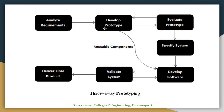We can see this with the help of a diagram. Here we are analyzing the requirements gathered, after which we develop a prototype. After evaluation, if the prototype is okay, we specify the system and proceed to implementation. Next, we go for validation to check whether the system is okay or not. If not, we make some changes. If the system is okay, we deliver the product to the customer.